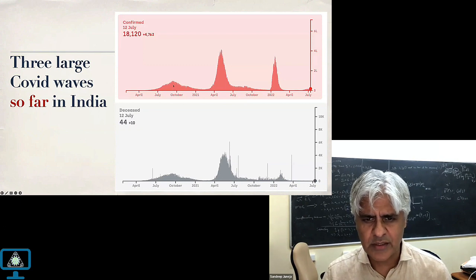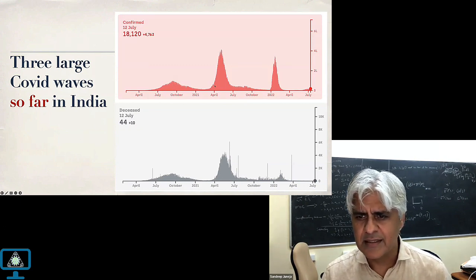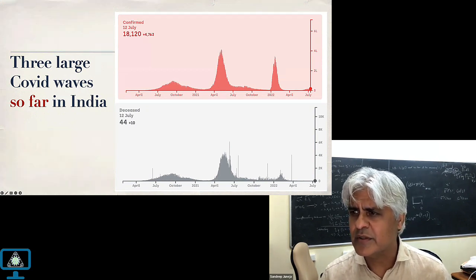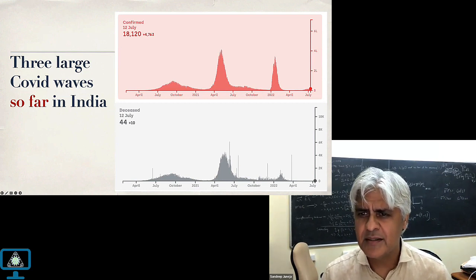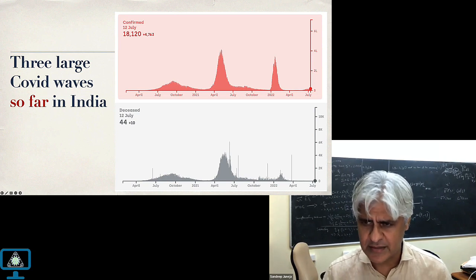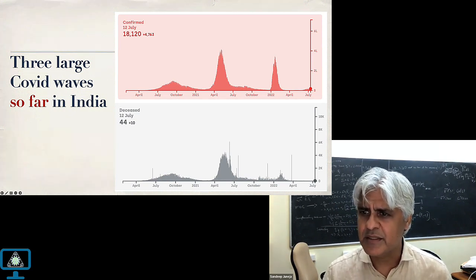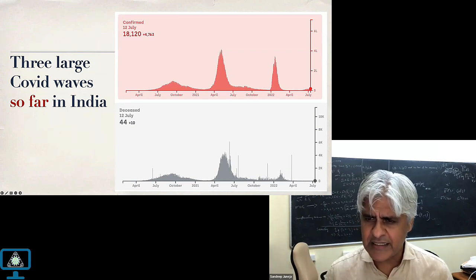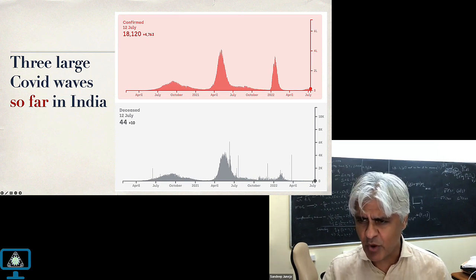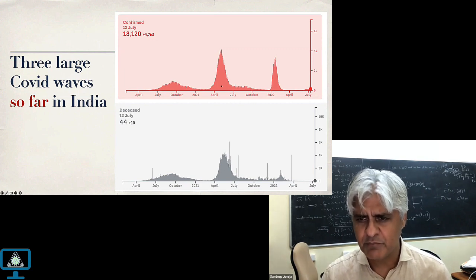The big wave was in 2020, peaking around September. Then we had the delta wave, which originated somewhere in Maharashtra around January, took shape, and when Mumbai opened up on February 1st — Mumbai trains carry about eight to nine million people daily — that opening became a super-spreader event. With a highly infectious variant available at that time, it had the opportunity to take off, and from Mumbai it plausibly spread to all of India and then the rest of the world.